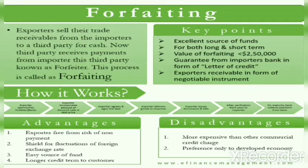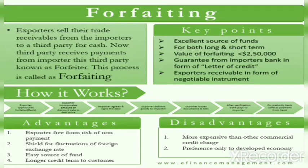This process, called forfeiting, involves key points such as being an excellent source of funds for both long-term and short-term needs. The value of forfeiting involves amounts of $250,000 or more, guaranteed by the importer's bank in the form of a letter of credit. The advantages of forfeiting include that exporters are free from the risk of non-payment, a protective shield is created against foreign exchange rate fluctuations, it is an easy source of funds, and longer credit terms are available to customers.